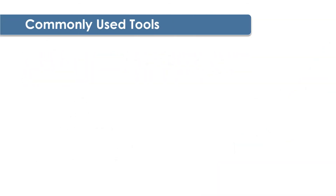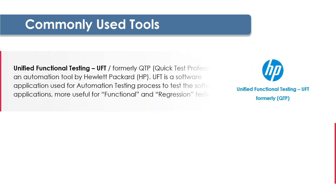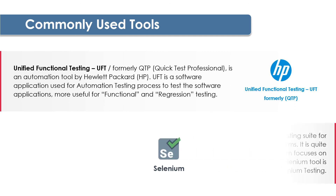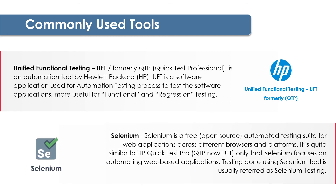Talking about automation, there are various tools currently available in the market. A few of them are Unified Functional Testing (UFT), formerly known as QTP or Quick Test Professional, and then we have Selenium. UFT and Selenium are both quite popular tools. However, the main advantage Selenium has is that it is a free automated testing suite for web applications across different browsers and platforms, unlike UFT which is a paid tool.